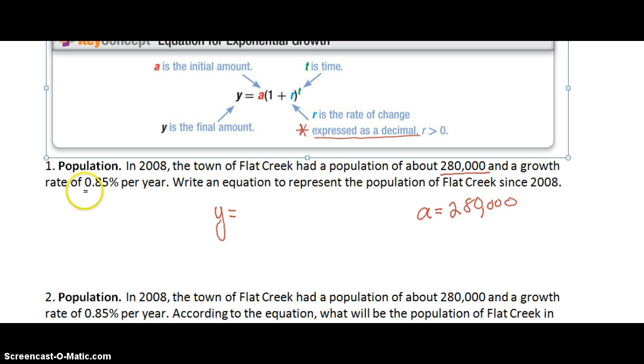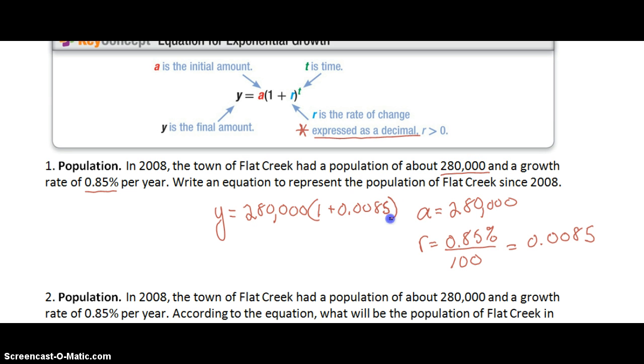What else did they give us? They gave us a rate so our rate is 0.85 percent they said but let's not forget we need to express this as a decimal so how do we express that as a decimal? Put it over 100 and we get 0.0085. Then we can substitute those into our equation. Y equals 280,000 times 1 plus 0.0085, and they did not tell us how many years we're working with yet so we're going to leave T as our variable for years. So that's going to be the equation that we use to represent the population.